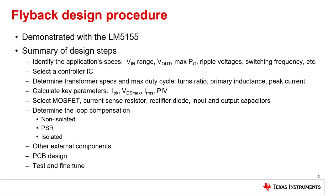I demonstrate on the controller IC LM5155, but most information is generic. We recommend these nine steps for the converter design, and these are the same steps used for any type of converter. It is most important to first understand and define the parameters needed by the design. These specifications start with the input voltage range, the output voltage, and the output current range. Further parameters are transient current and speed, ripple voltage due to transients, and switching frequency. Do not forget further parameters like available area, maximum height, and any parameter important for the application.